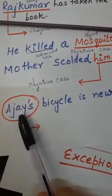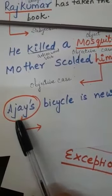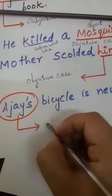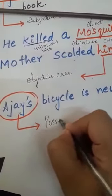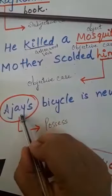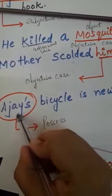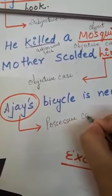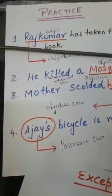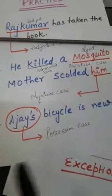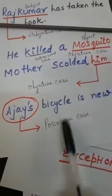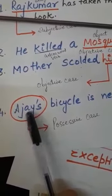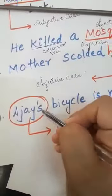Now let's take another example: Ajay's bicycle is new. Here this bicycle belongs to Ajay — ownership is there, possession is there — so this is a possessive case. To identify the possessive case, we ask the question 'whose bicycle?' The answer will be Ajay's bicycle, so it is in possessive case.